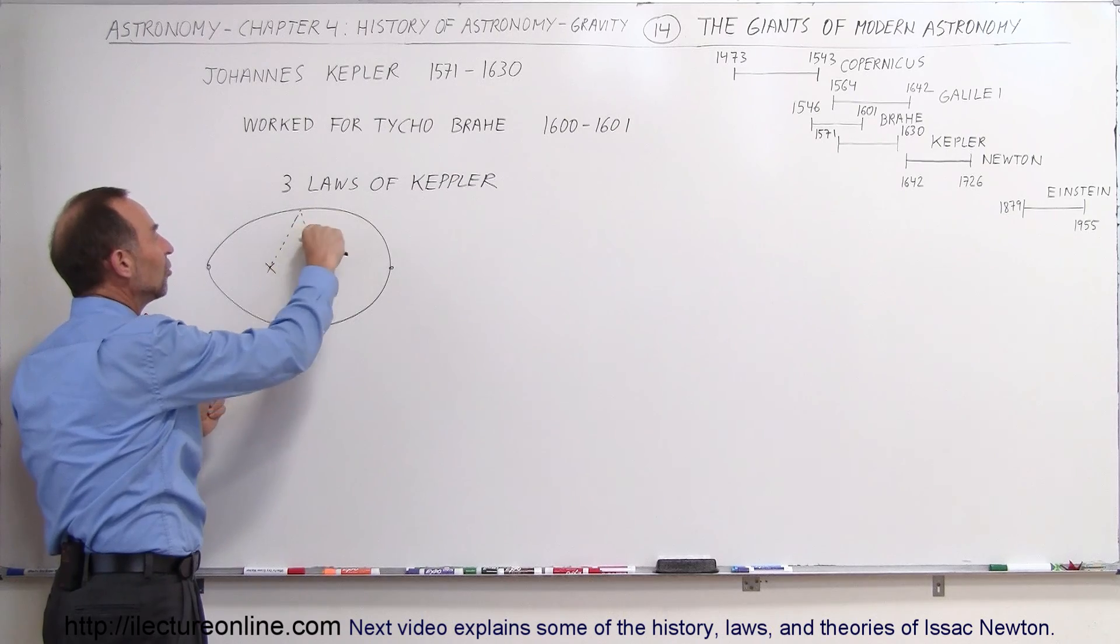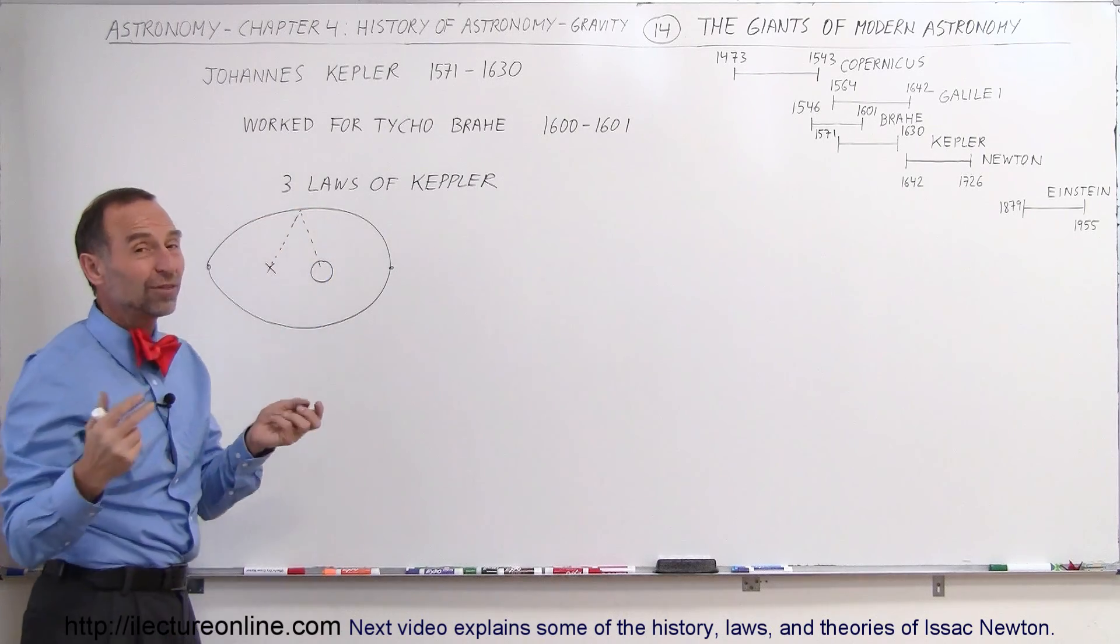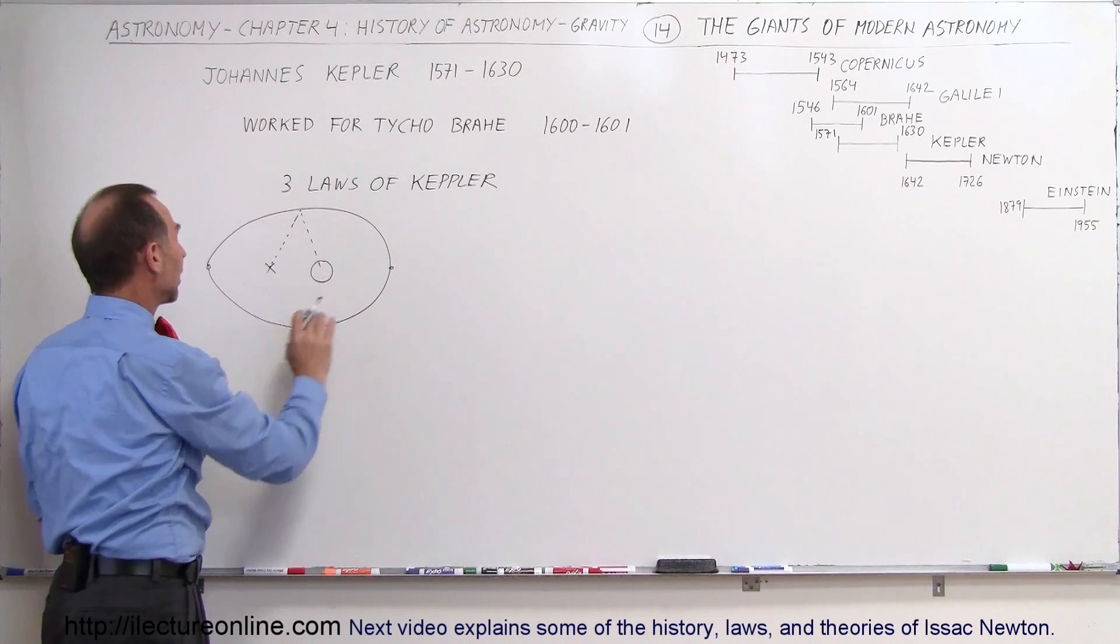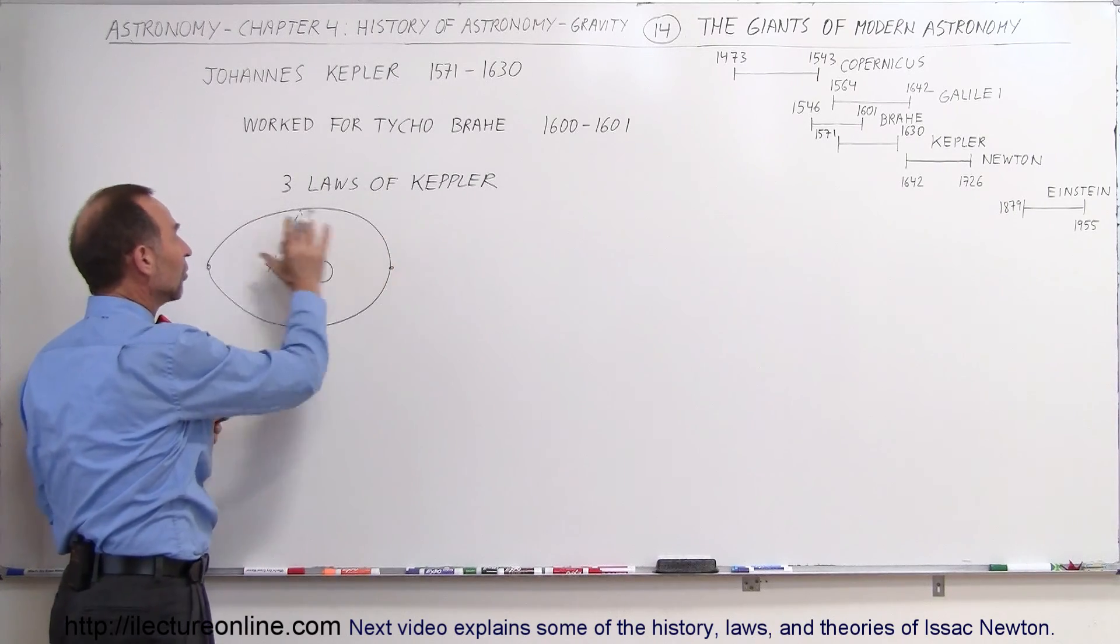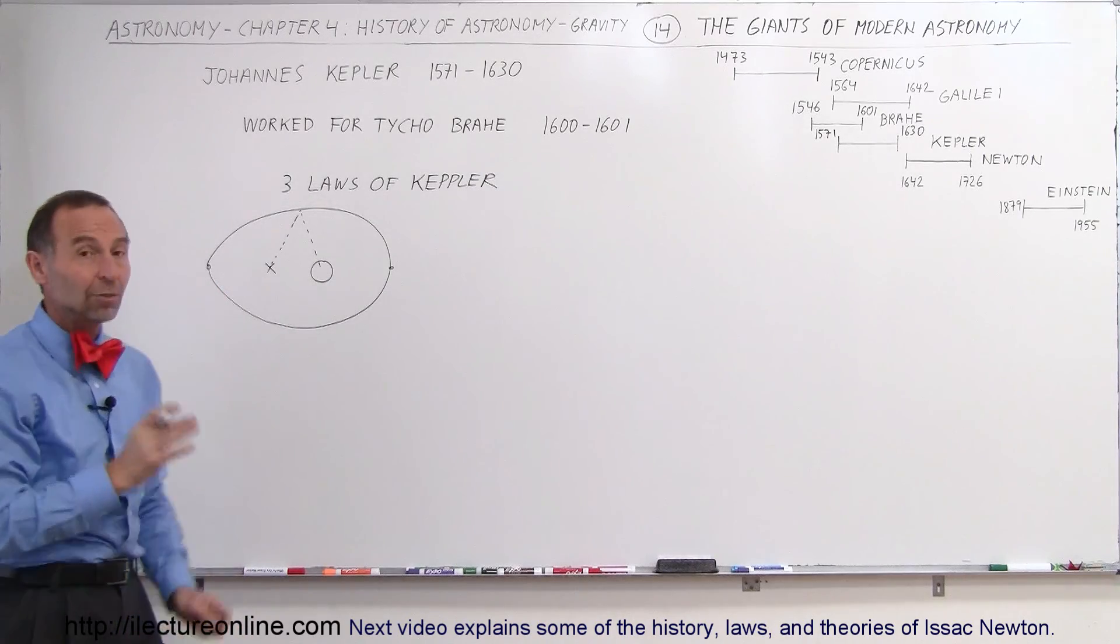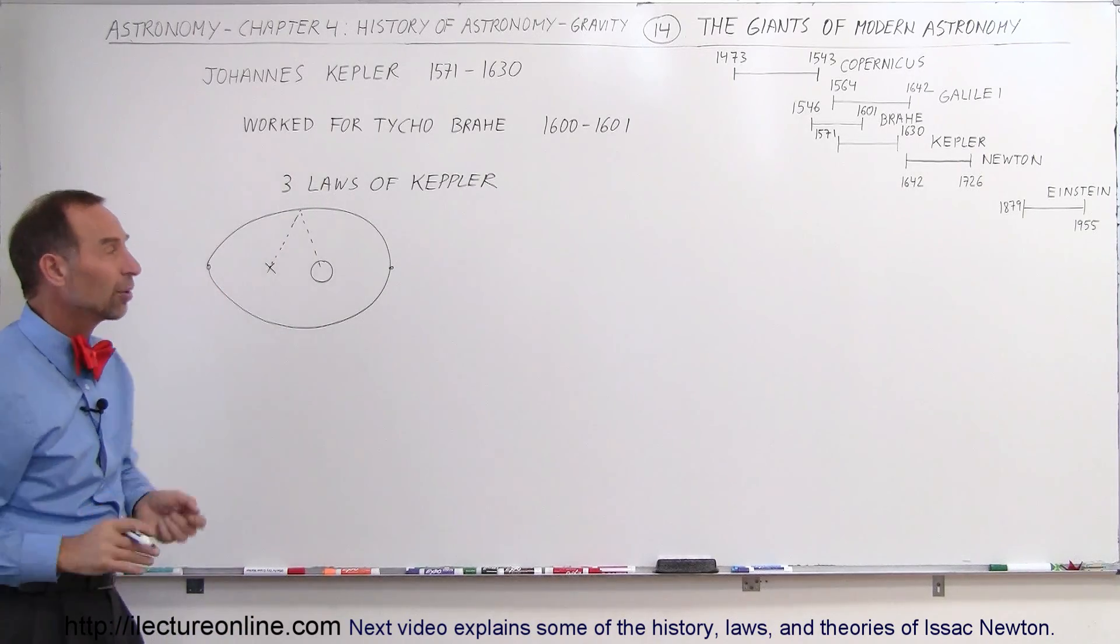And so the sum of these two distances always have to be the same. And that's what we meant by the Sun being at one of the foci, such that the planet sometimes is close and sometimes is far away. So that was the first law of Kepler, that he realized that the motion of planets were elliptical rather than circular.